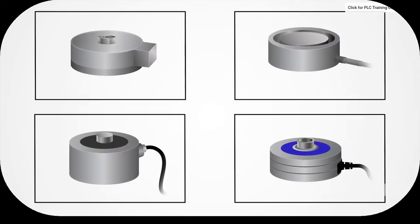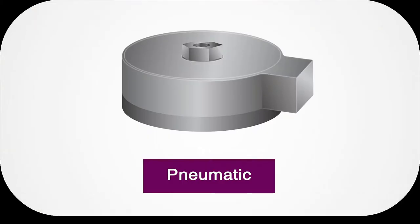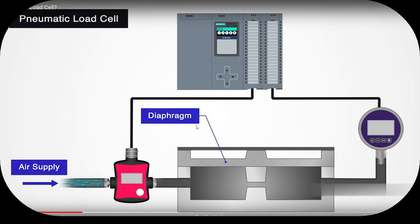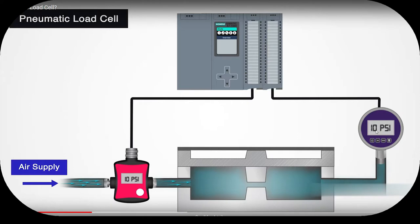There are four common types of load cells: pneumatic, hydraulic, strain gauge, and capacitance. A pneumatic load cell consists of an elastic diaphragm attached to a platform surface where the weight will be measured. There is an air regulator limiting the flow of air pressure and a pressure gauge. When an object is placed on a pneumatic load cell, it uses pressurized air or gas to balance out the weight of the object.